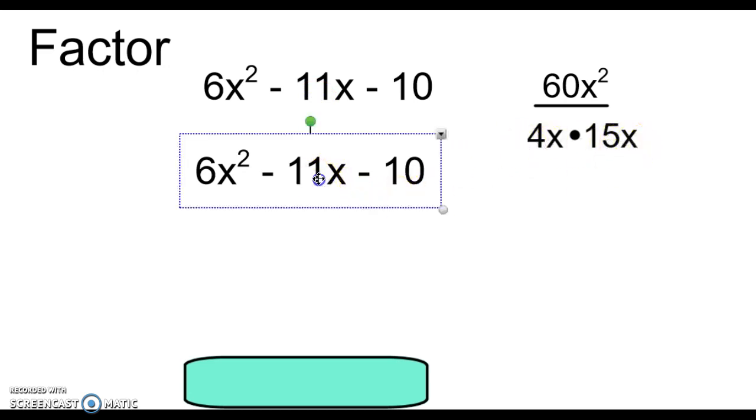So instead of having a -11x, it's going to be a -15x and then it is going to be a +4x. One's negative, one's positive, because at the end you have a negative sign. Negative means your signs are different.